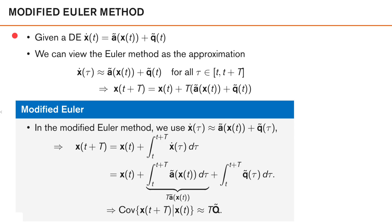The second technique to select the covariance of the discrete time motion noise is something referred to as the modified Euler method. It is essentially the same as the Euler method, but the noise is handled in a slightly more elaborate fashion. Here we consider a general nonlinear differential equation where Ã is possibly a nonlinear function of X(t). We can view the Euler method as the approximation that Ẋ(τ) ≈ Ã(X(t)) + q̃(t) for all τ within the sampling interval, meaning we approximate the time derivative of X as constant over the complete interval.